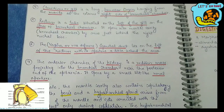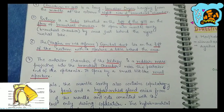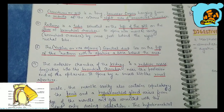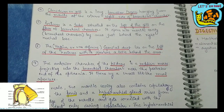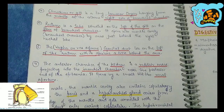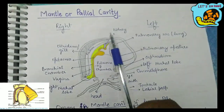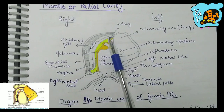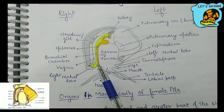The next organ is the kidney. The anterior chamber of the kidney — because the kidney is divided into anterior and posterior chambers — is a reddish mass projecting into the branchial chamber. It is a reddish sac-like structure present near the posterior end of the epithenia, and it opens into a small slit-like renal aperture. In the diagram, this structure represents the kidney of the Pila.